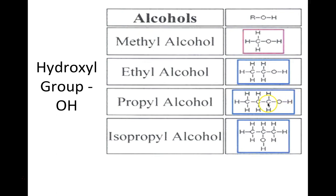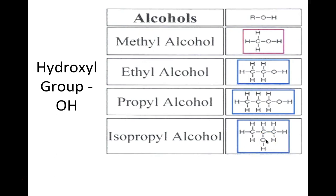Propyl alcohol has three carbons with a hydroxyl group attached. Many students have heard of isopropyl alcohol — that's rubbing alcohol. The difference is the placement of the hydroxyl group: when it's on a terminal carbon we call it propyl alcohol or propanol; when it's attached to an internal carbon between the two ends, we call it isopropyl alcohol or isopropanol. So: methyl alcohol / methanol, ethyl alcohol / ethanol, propyl alcohol / propanol, and isopropyl alcohol / isopropanol.